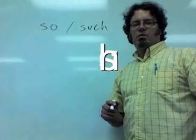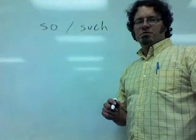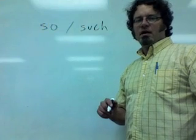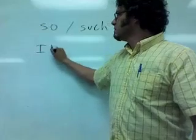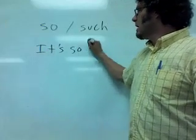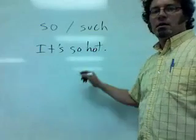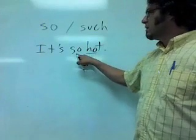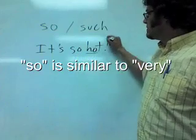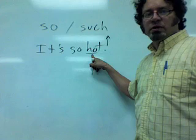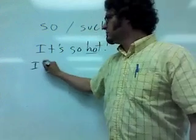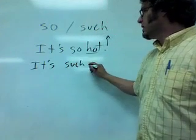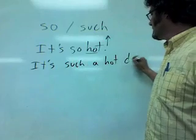So and such are words used with adjectives to increase the intensity of the adjective. For example, it's so hot. Hot is the adjective. The word so increases the intensity of this word, hot. If I used such, I could say it's such a hot day.